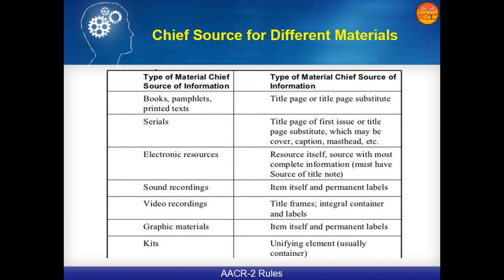The chief sources of information for different materials in order to prepare the catalogue are: for books, pamphlets, and printed text — the title page or title page substitute; for serials — the title page of the first issue or title page substitute; for electronic resources — the resource itself or the source with the most complete information; for sound recordings — the item itself and permanent labels; for video recordings — title frames, integral container and labels; for graphic materials — the item itself and permanent labels; for kits — the unifying element, usually the container.